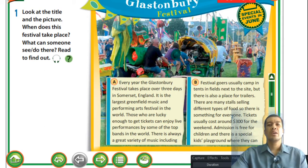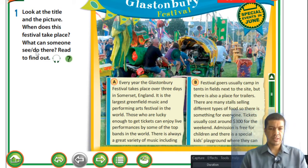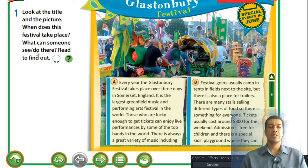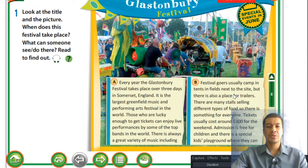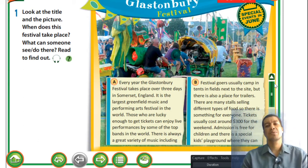I'm sure you're familiar with festivals — even in Vietnam we have lots of different festivals, for example the Mid-Autumn Festival, and during Tet as well. Now, looking at the book, we're looking at the Glastonbury Festival. It's a special event that takes place in June. Read the Culture Corner in unit 10D — look at the title and the picture: when does the festival take place and what can someone see or do there? Read to find out.